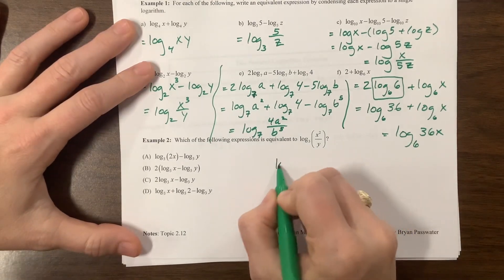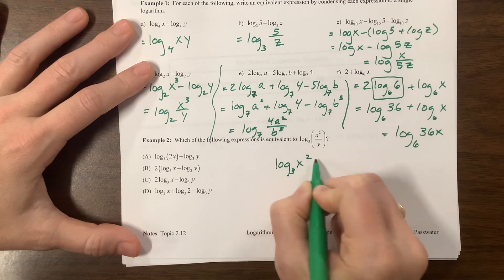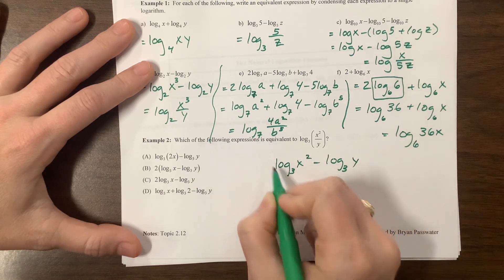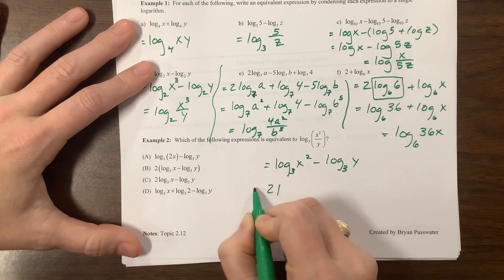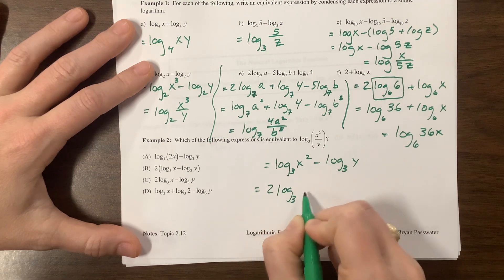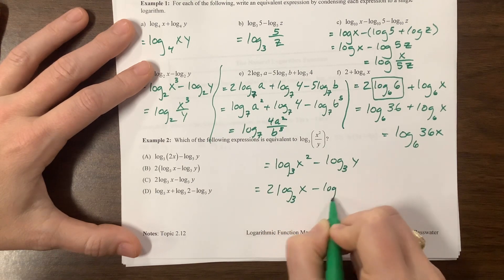So which one is equivalent here? This becomes log base 3 of x squared minus log base 3 of y. That 2 can come out front. There's an equal sign. 2 log base 3 of x minus log base 3 of y.